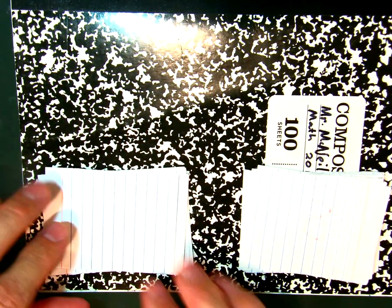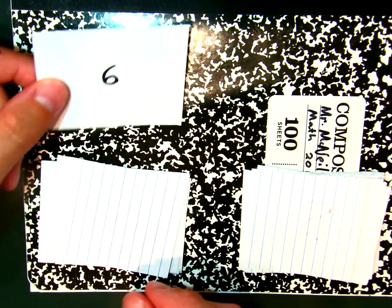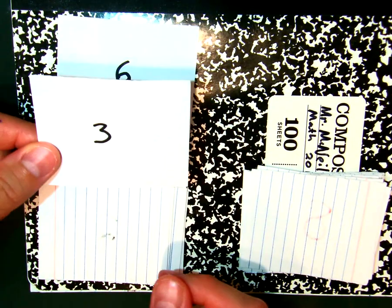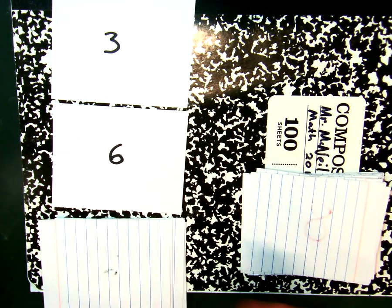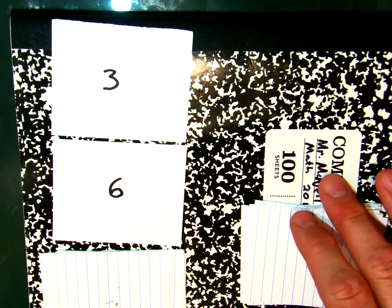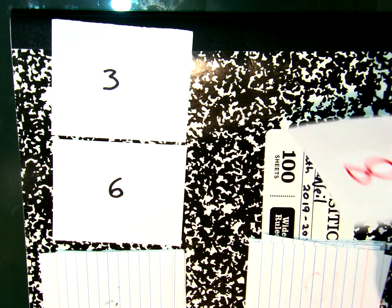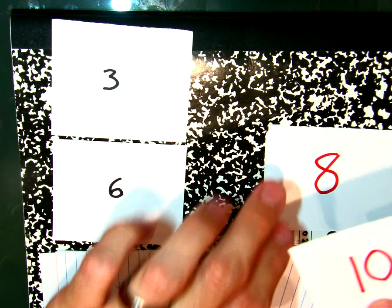Player one will draw from the top. I've got a number, and I'm going to draw another card. I'm going to see which number is bigger. The bigger number is going to be my denominator. So I'm going to make a fraction, 3 over 6. Player two will draw. Oh, I've got an 8. I think that might be my denominator. Oh, hey, 10. It's a numerator.